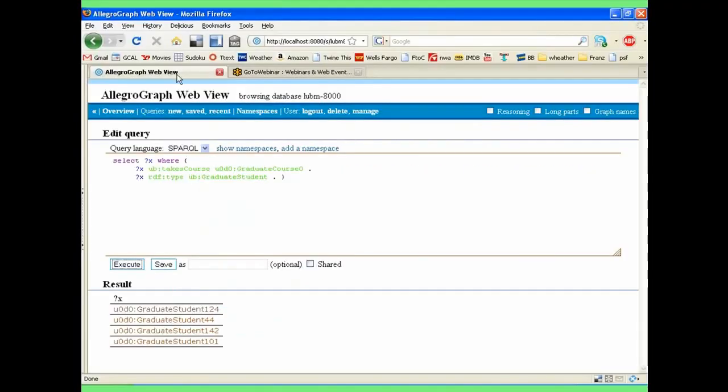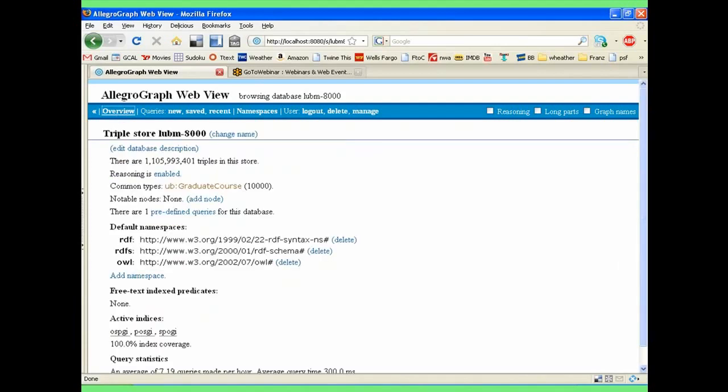So this is the AllegroGraph WebView. I can do queries. I can choose here between SPARQL and Prolog. I'm doing this - what we see here is I have a triple store open. Actually I have a few triple stores open. Here's one which is the Lubom 8000 - I'll talk about that one in a little while. It's a triple store that has 1.1 billion triples in this database. The reasoning is enabled. Here's some namespaces that I've added before.